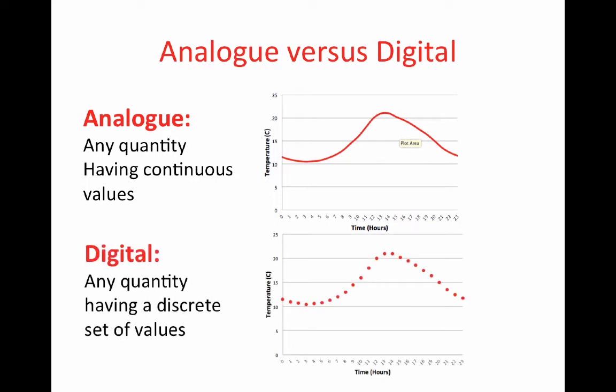Some examples of analogue quantities are time, sound, distance, pressure and temperature.